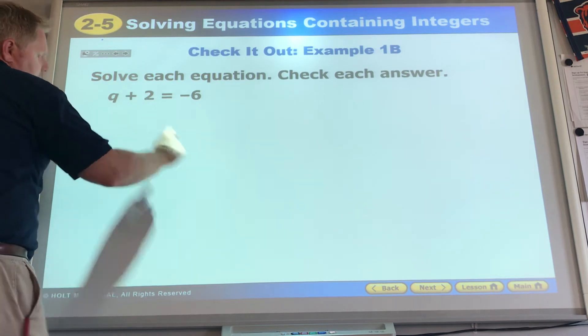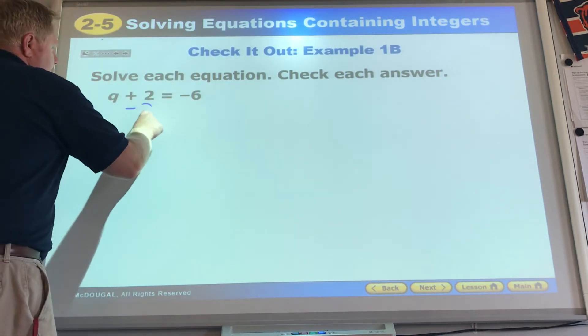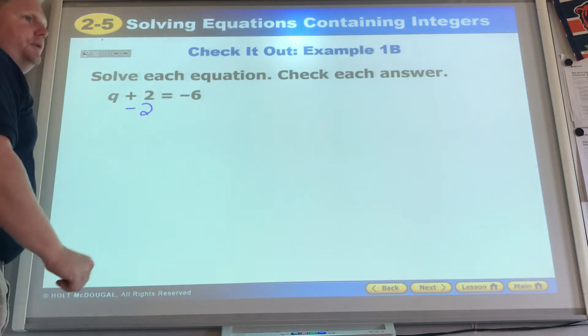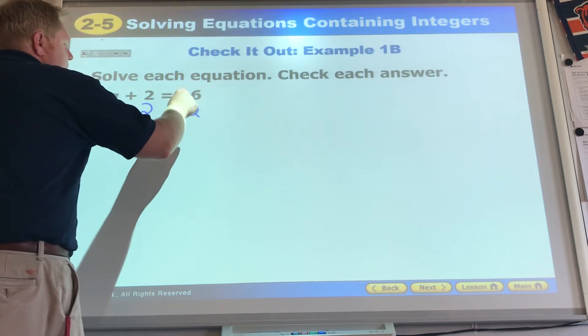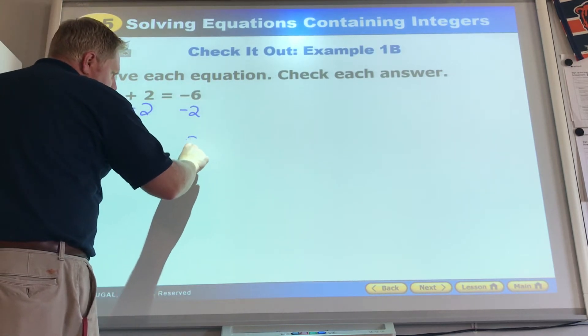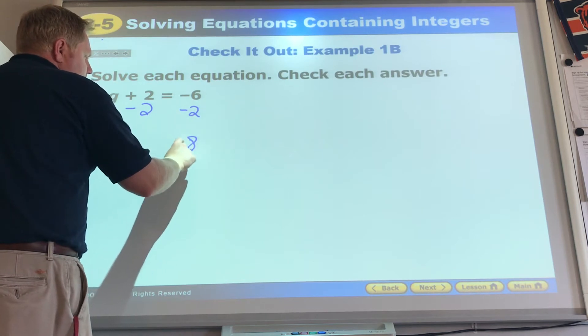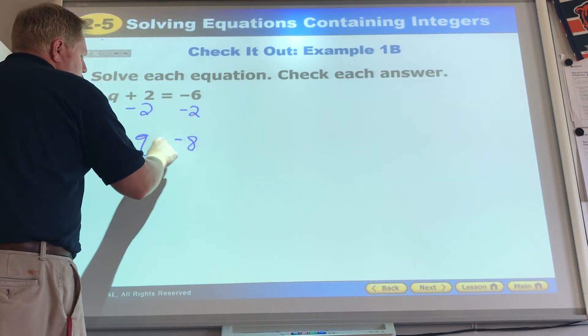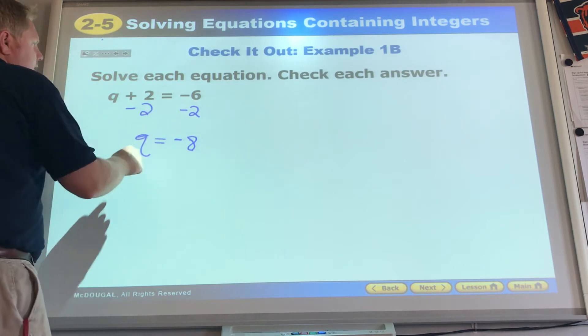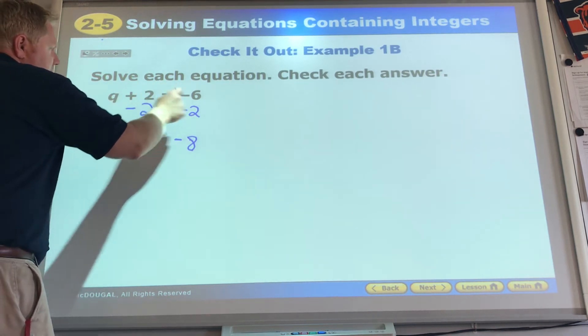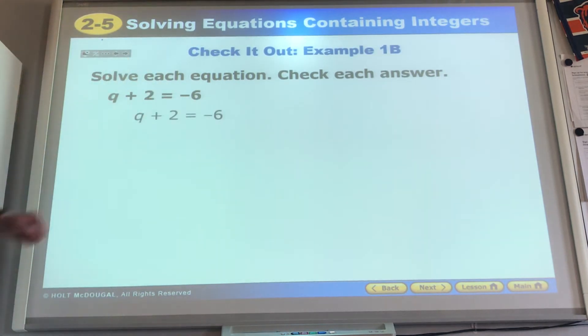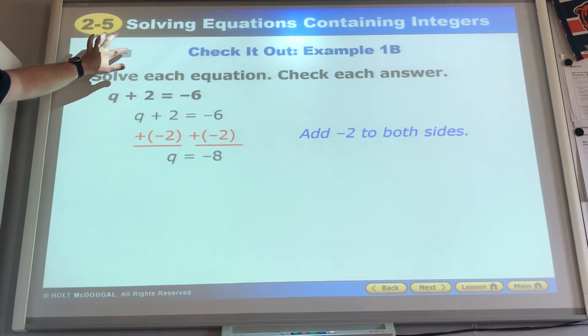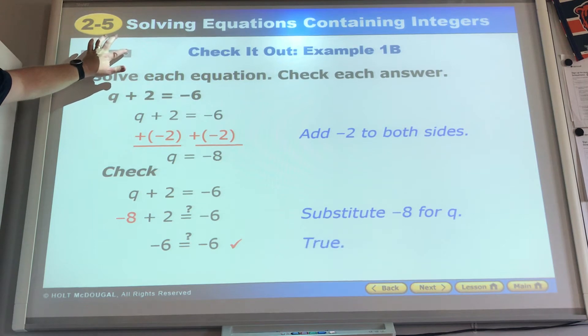We see this side is where we work first. We're going to subtract the 2. Now if we subtract on one side, hopefully Lily is saying to her sister, we subtract on the other side. Signs are the same, so you add and keep the sign. Q equals negative 8. Negative 8 plus 2 is negative 6.